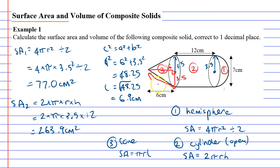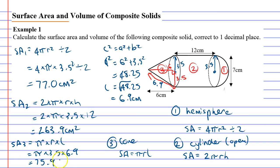Now that we know l = 6.9 cm, we can find the surface area of shape 3: π × r × l = π × 3.5 × 6.9, which gives us 75.9 cm².